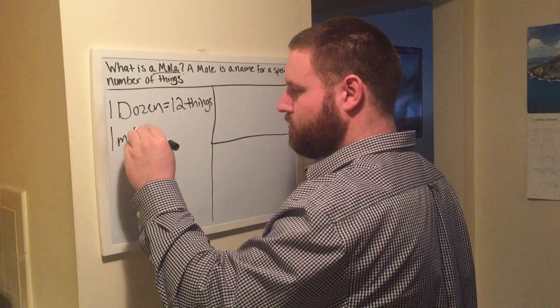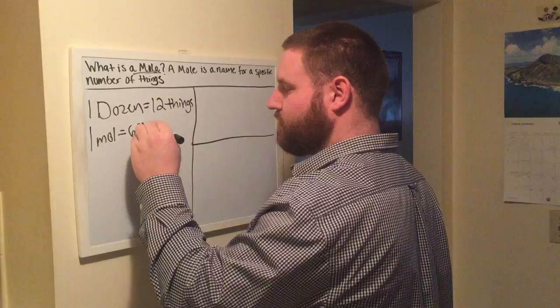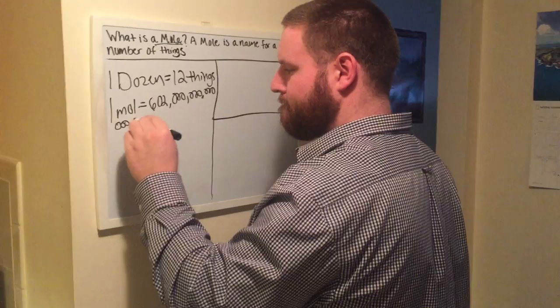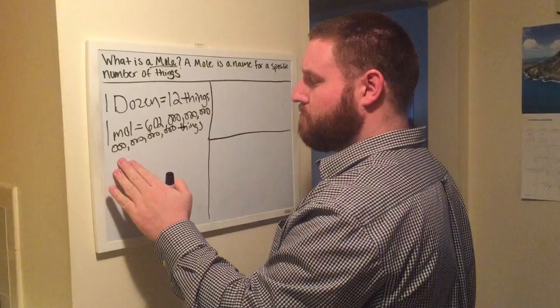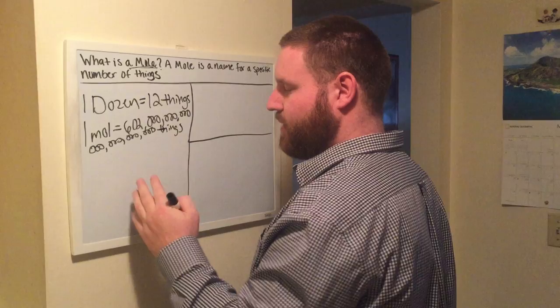Now, in chemistry, one mole is equal to six hundred and two hexillion things. Six hundred and two hexillion things. One dozen is equal to twelve, as one mole is equal to six hundred and two hexillion things.